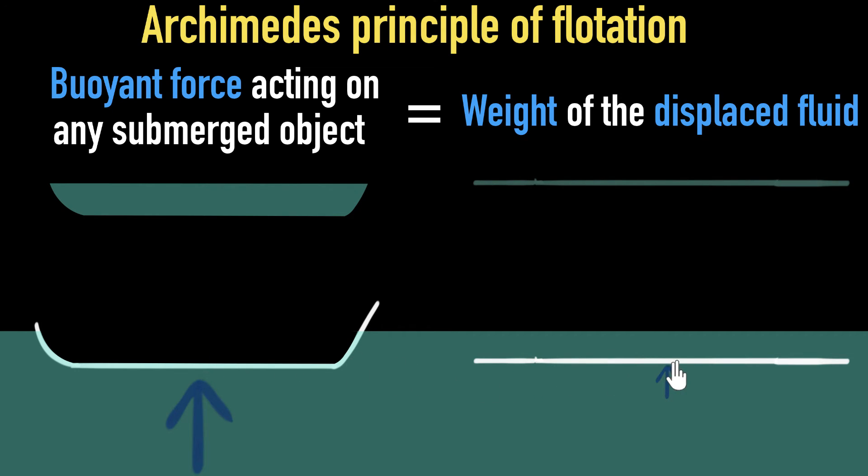On the other hand, if you have flat things or things which do not have empty space, they will not displace enough water or enough liquid, in which case they can easily sink. And that's why even if you take a tiny piece of metal, which is pretty light, it will sink because it's not able to displace enough liquid.